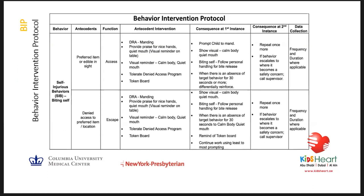Once we have all this information, we create the Behavior Intervention Protocol. We must get parent approval before starting anything. The BIP can be very extensive — sometimes 10 to 15 pages. For example, if the child has self-injurious behavior of biting himself for access and escape: the antecedent is any preferred item or edible in sight. Antecedent interventions include DRA manding — prompting the child to ask — providing praise for keeping 'nice hands and a quiet mouth,' giving a visual reminder about calm body, tolerate-denied-access programs, and a token board.